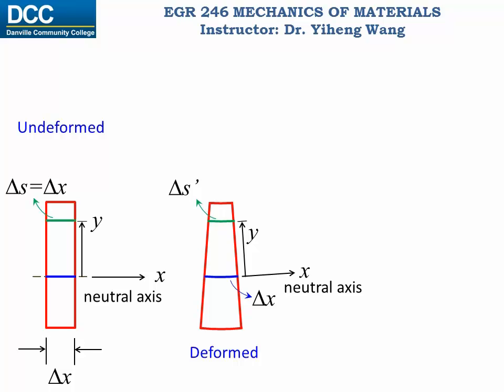Since the two cross-sections have rotated from their original locations, they are no longer parallel to each other, therefore they will eventually intercept at the point O if we extend them. And the angle they make is delta theta.